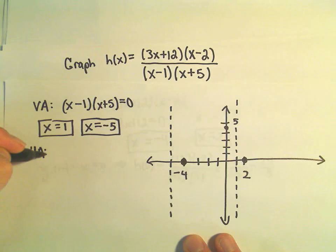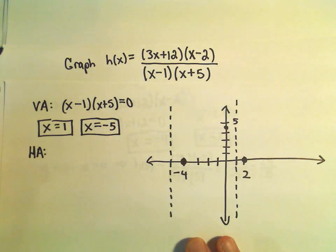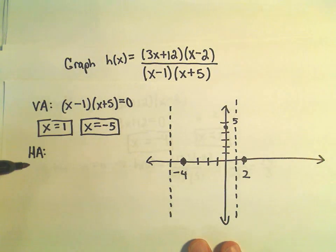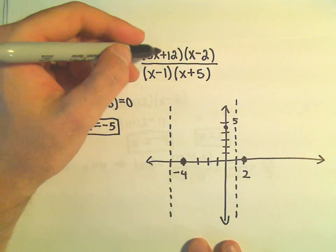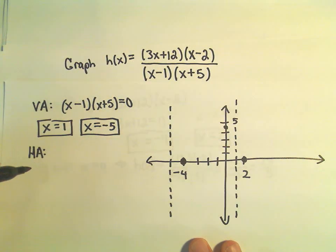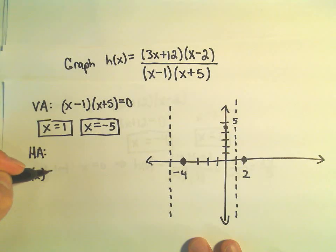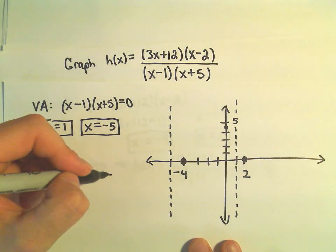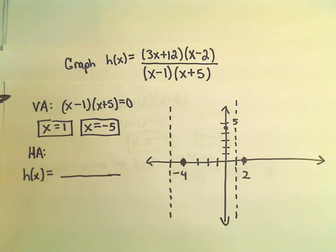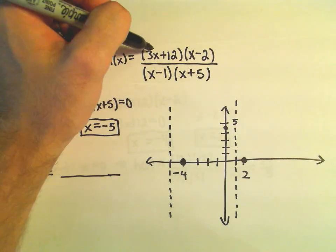To figure out the horizontal asymptote, what I'm going to do is I'm going to basically multiply it out. Because I really need to think about the degree. But actually I'm going to be a little lazy here because really what's important is the biggest power on the top and the biggest power on the bottom.